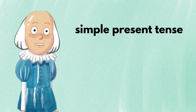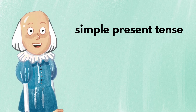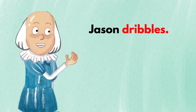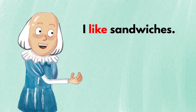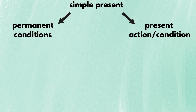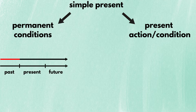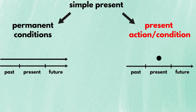The simple present tense refers to expressions such as 'Jason dribbles' or 'I like sandwiches.' There are two meanings to the simple present. The first meaning refers to permanent conditions — things that held true in the past, hold true now, and will always hold true in the future. The second meaning refers to an action or state that is happening right now.